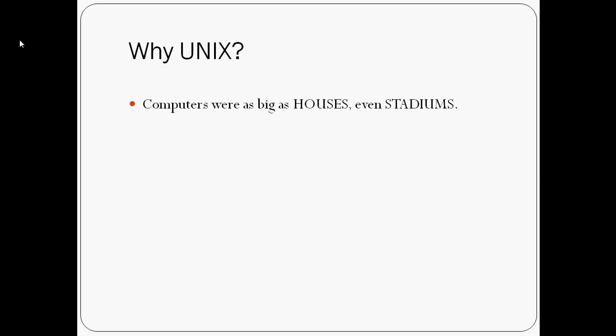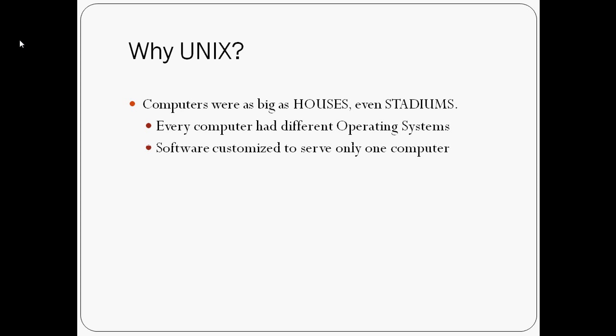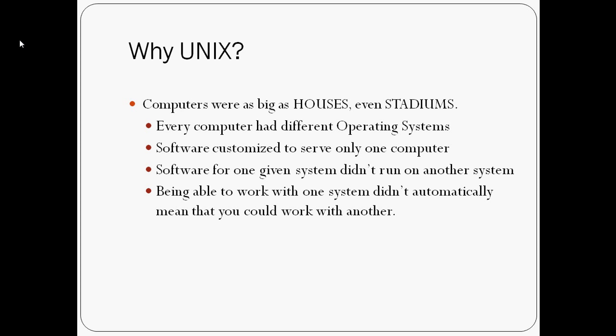Talking about the operating system, there were many problems. The operating system is basically the interface between the hardware and the application software. Before UNIX came into existence, every computer had a different operating system. Software was customized to serve only one computer, so a software for one given system did not run on another system. Being able to work with one system did not automatically mean you could work with another. Back then, there was no file sharing technology or electronic email services.